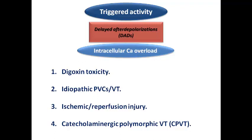Idiopathic PVCs and VT represent delayed afterdepolarization, which is why idiopathic PVCs respond mostly to calcium channel blockers for treatment. Ischemic and reperfusion injury also represent delayed afterdepolarization — the VT occurring in acute MI or after reperfusion represents increased intracellular calcium caused by abnormal handling of calcium by the sarcoplasmic reticulum or cell surface receptors. Another example is catecholaminergic polymorphic VT, a channelopathy we will discuss in a separate lecture.